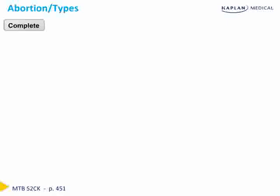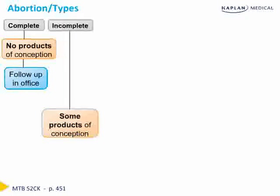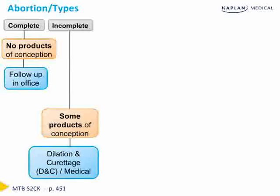We're going to review the different types of abortions. These definitions will need to be memorized for the Step 2 exam, since each type has different management options — you need to know the diagnosis first in order to answer what the next best step in management is. With a complete abortion, there are no products of conception left behind; we simply follow these patients up in the office to ensure their symptoms resolve. With an incomplete abortion, some products of conception are left behind; we offer either surgical management with dilation and curettage or medical management to expel the products of conception.